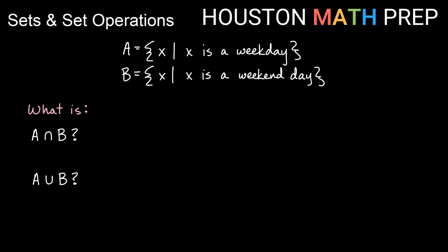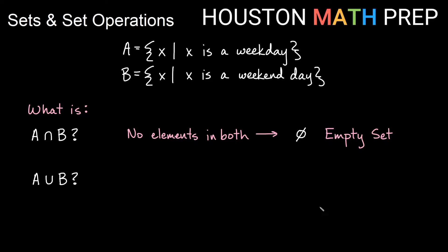Let's go back to our sets A and B where A is the set of all weekdays and B is the set of all weekend days. What is the intersection of A and B? In other words, what elements are in both A and set B? Well, these are all weekdays and these are weekend days, so there actually aren't any elements that are in both of the sets. Monday through Friday is in A; Saturday and Sunday are in B. So there are no elements in A intersect B. When we have no elements in a set, we call that the empty set. We write it with a circle with a little diagonal slash through it. That's the set that just doesn't have any elements in it.